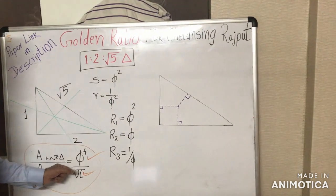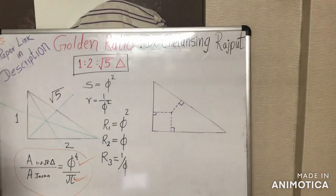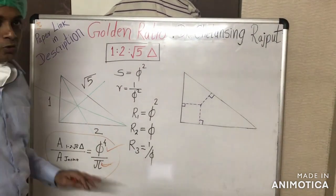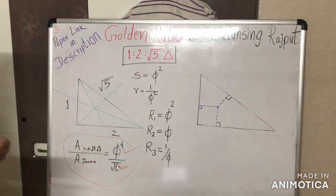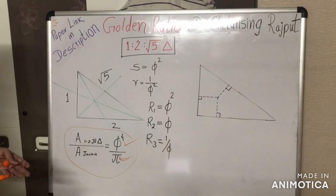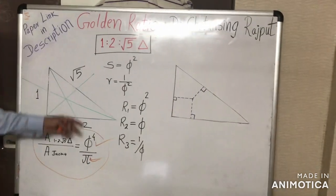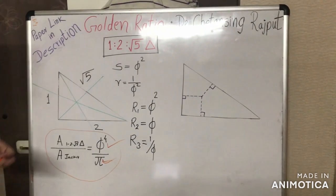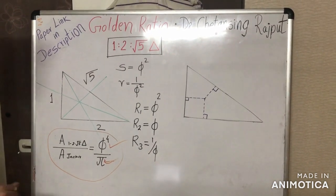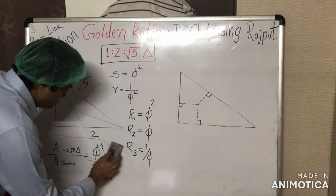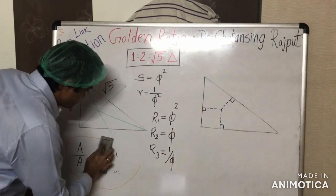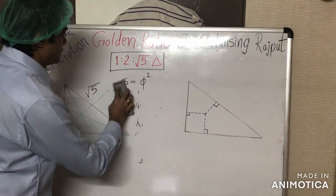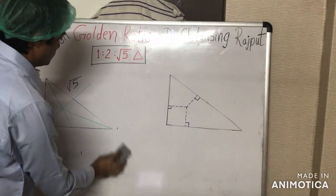This precise φ-π correlation is exact to infinite decimal places. We will see the details of this φ-π correlation based upon this triangle in subsequent parts of the video. Now let us see some other golden aspects of this 1-to-√5 triangle.